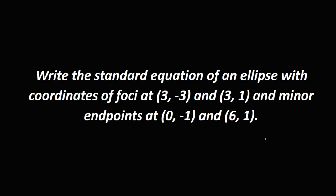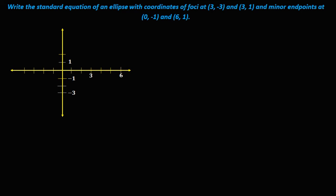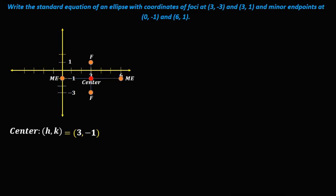For the last example, write the standard equation of an ellipse given the coordinates of the foci and minor endpoints. Graph the given points. The foci are at (3, -3) and (3, 1). The minor endpoints are at (0, -1) and (6, -1). The point of intersection of these coordinates is the center of the ellipse, which is (3, -1). So h = 3 and k = -1.